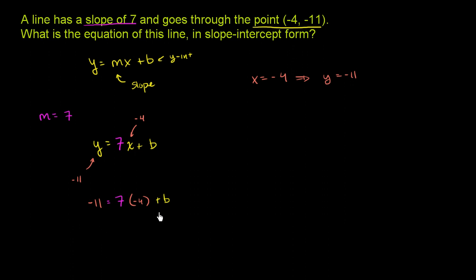And now we can just solve for b, a b that satisfies the constraint that when x equals negative 4, y equals negative 11. So we get negative 11 equals 7 times negative 4, which is negative 28, plus b.